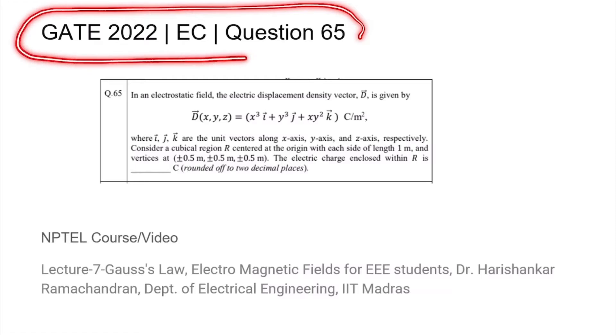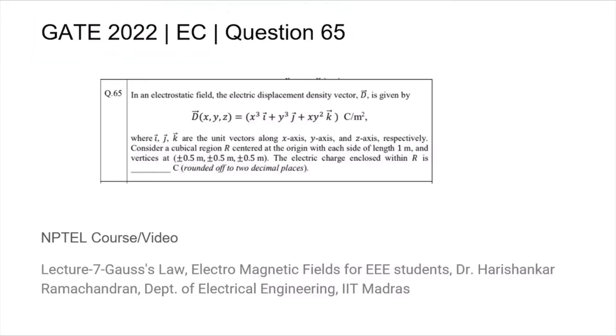This is question 65 from the GATE 2022 EC paper where we are given the following electric displacement density vector and are asked to find out in the region R what the electric charge enclosed within is.